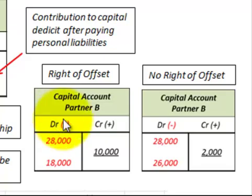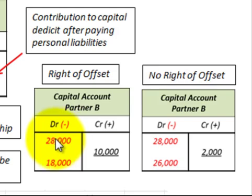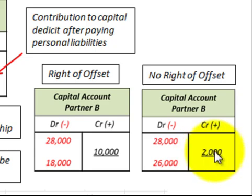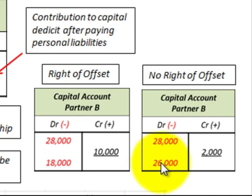Using the right of offset: partner B had a deficit of $28,000, and the $10,000 loan due from the partnership reduces that deficit to $18,000. Without the right of offset: the deficit was $28,000, reduced only by the $2,000 contribution to capital deficit after paying personal liabilities, leaving a capital deficit of $26,000. So the capital deficit is $26,000 without the right of offset versus $18,000 with the right of offset.